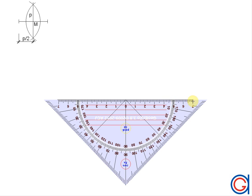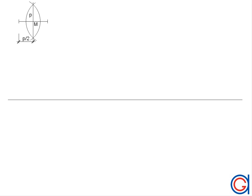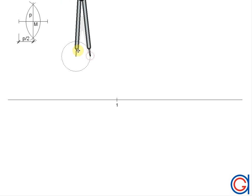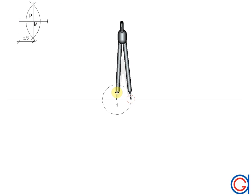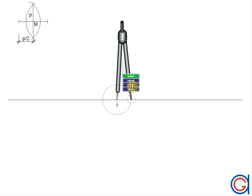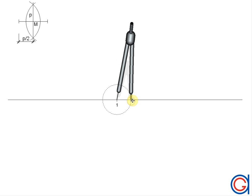Now we are going to draw a straight horizontal line in the center of the screen and mark point one, as can be seen here. Setting our compass to length P over two, we are going to transport it onto our horizontal line. Centering our compass on point one, we scribe an arc until it cuts the line at point two, which will also be the second center of our spiral.